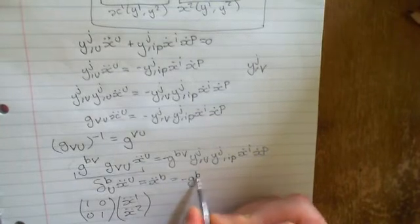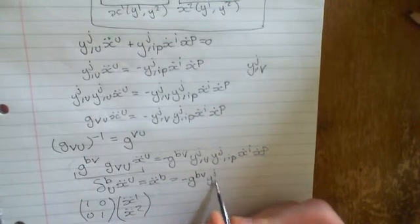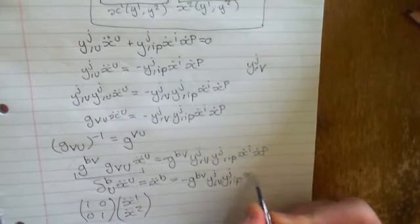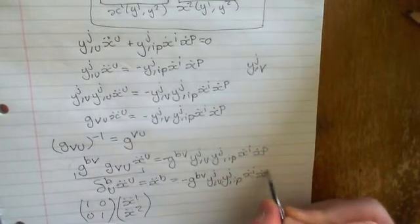And then it makes sense. So minus g^bv y_j,v y_j,ip x dot i x dot p.